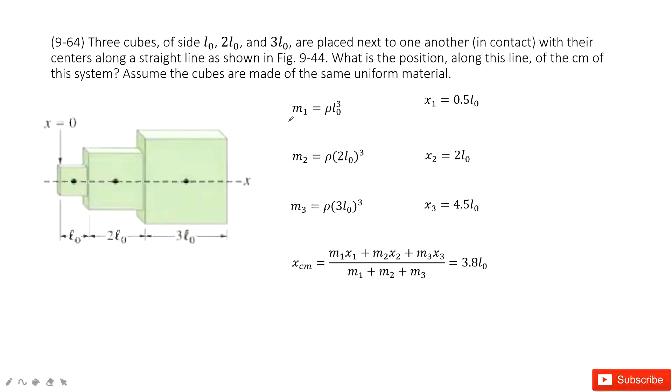First, we can determine the mass for each one. So mass for one is the density times the volume, the second one is the same thing, density times volume, and the third one, density times volume.